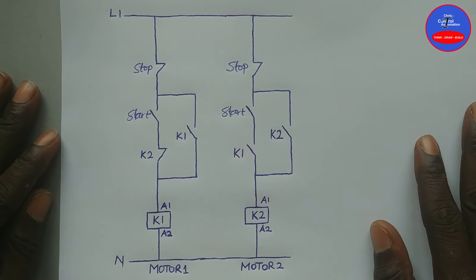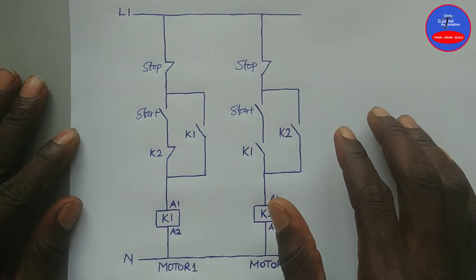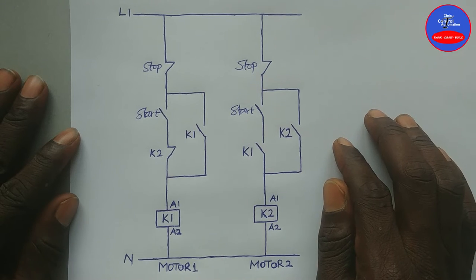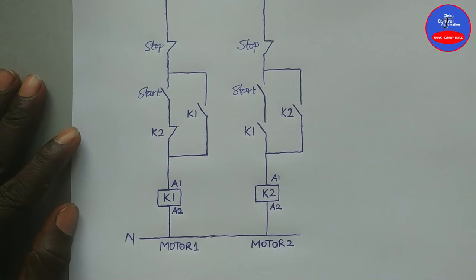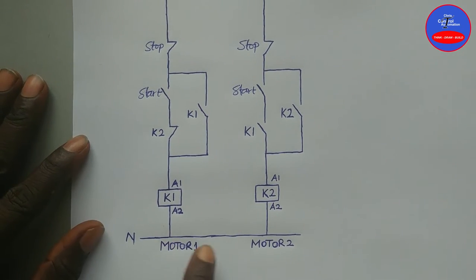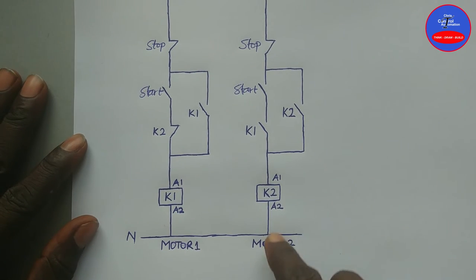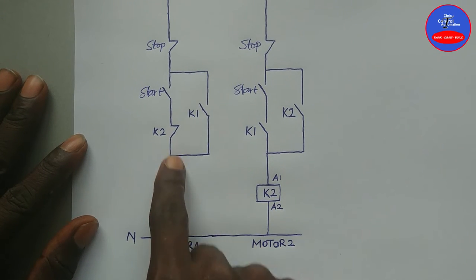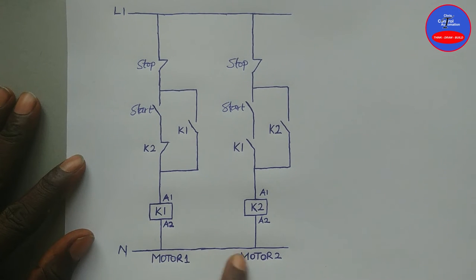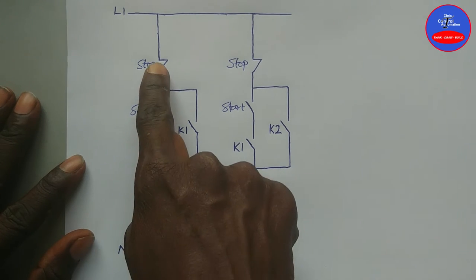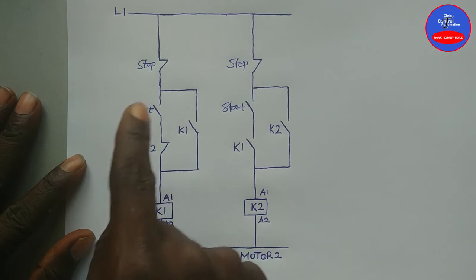Hello, you are welcome to my channel. In today's video we are going to look at a sequential control circuit such that we have two motors, Motor 1 and Motor 2. Motor 2 can only be started when Motor 1 is running, and when the two motors are working and we stop Motor 1, there is no way we can restart Motor 1 unless we stop Motor 2.